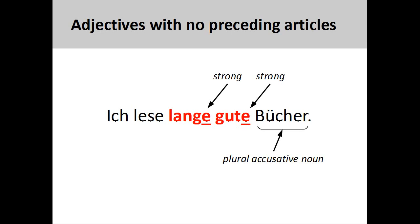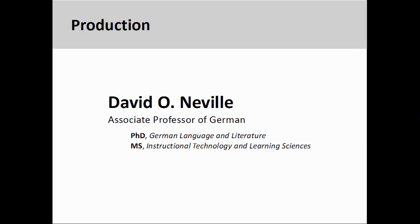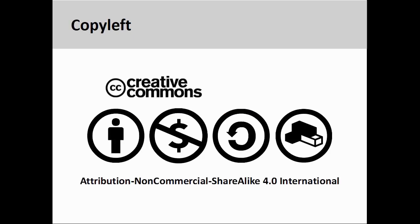And that concludes this presentation on German adjectives with no endings, weak endings, and strong endings. Although perhaps difficult at times, there is a logical pattern that can be memorized and consistently applied. The main thing is not to give up and to keep practicing. The German Grammar Video series is produced by David Neville, Associate Professor of German. The videos, scripts, and lecture slides are released under a Creative Commons Attribution Non-Commercial Share-Alike 4.0 International License. Don't be a square — remix and share.